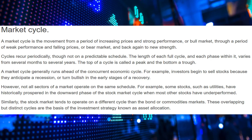Similarly, the stock market tends to operate on a different cycle than the bond or commodities market. These overlapping but distinct cycles are the basis of the investment strategy known as asset allocation. Asset allocation comes into play based on the market cycles, because you can shift what you're investing in based on what market you're in. You really have to understand what market you're in for this to work well. And there are certain investments that are going to run pretty well in the upward trend regardless of what market you're in.